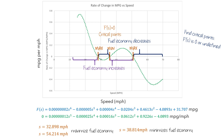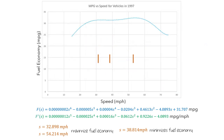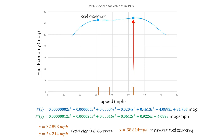Let's take a look at these points on the original graph of fuel economy versus speed. Here's the graph of fuel economy versus speed, and we can see that a speed of 32.898 miles per hour gives us a local maximum — it's the largest value of fuel economy for a small range of speeds. But only a speed of 54.214 miles per hour gives us the global maximum, the largest overall fuel economy over the entire domain. We can see this in the graph because the global maximum occurs where the graph achieves its largest y-value.